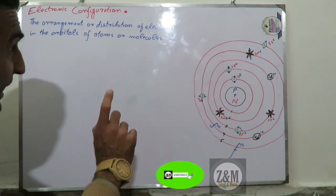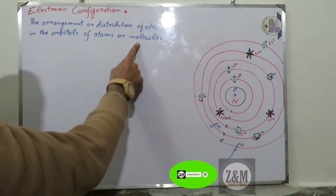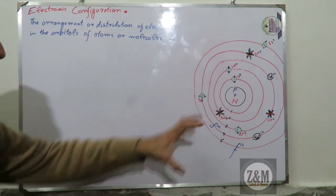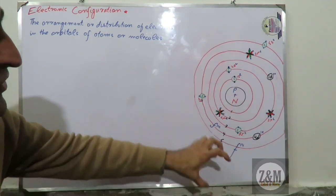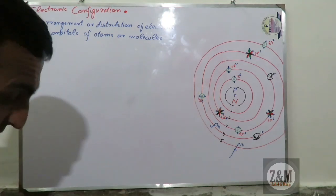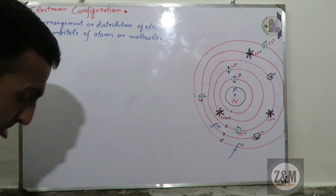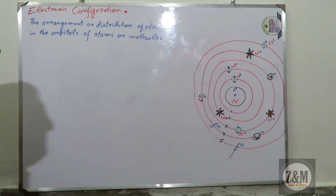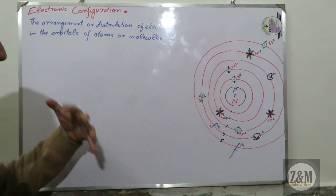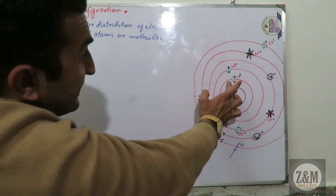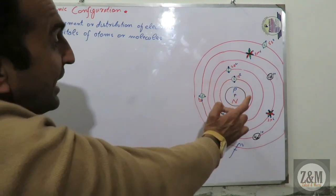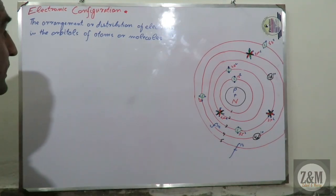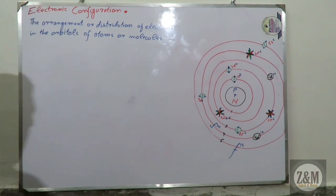It means the arrangement of electrons in orbitals. If you want to make a difference between one orbital or another orbital, then you can make a difference.